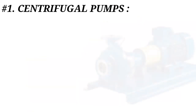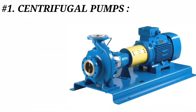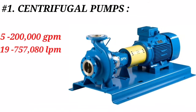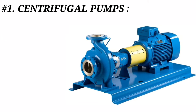The flow rate ranges for centrifugal pumps are 5 to 200,000 GPM (gallons per minute), or approximately 19 to 757,080 liters per minute.